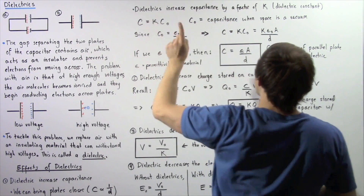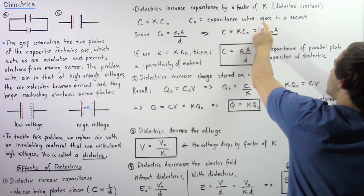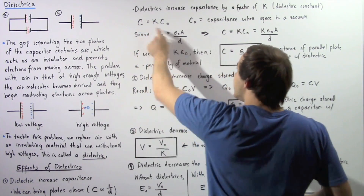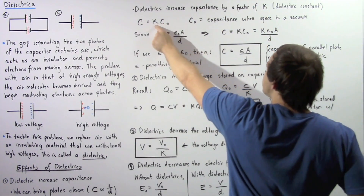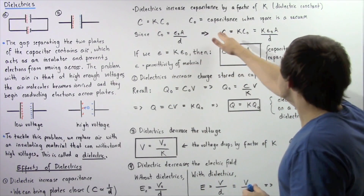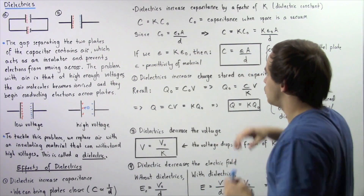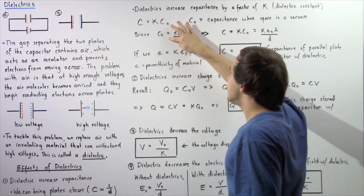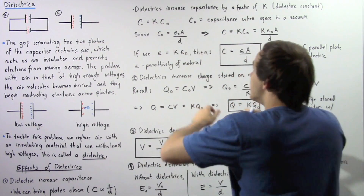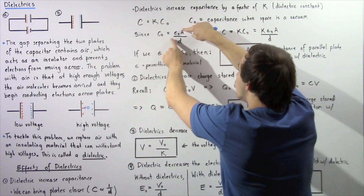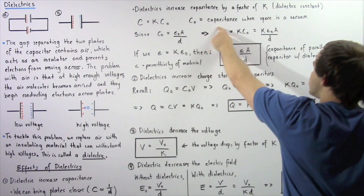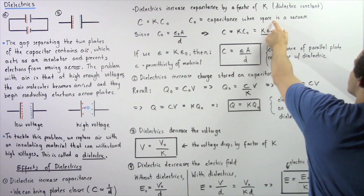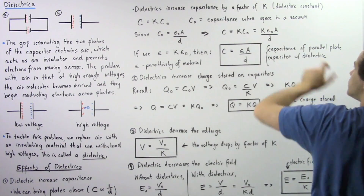If we define C0 as the capacitance when the space between the two plates is a vacuum, then the capacitance C with our dielectric is equal to C0 multiplied by the factor K. Recall that C0 is equal to the permittivity of free space ε0 multiplied by the surface area of either plate divided by the distance separating the two plates. Substituting, the capacitance with the dielectric equals K times ε0 times A divided by D.